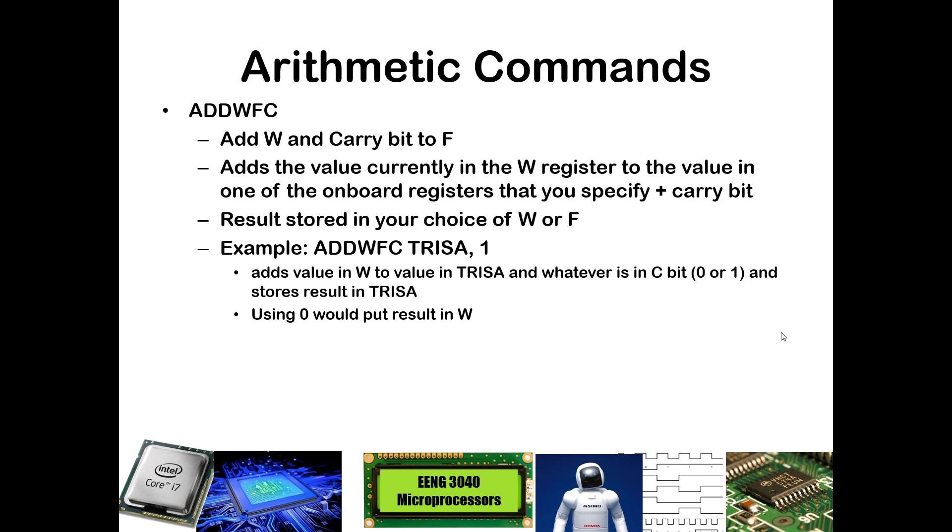ADDWFC is very similar to ADDWF, but it has the added functionality of adding in whatever is in the C bit. This can be done by manually setting or clearing using a bit set or bit clear the C bit in the status register, or you can use the result that was in the C bit from the prior operation. If you had done a previous addition operation that may have impacted the C bit and you want to maintain that value and use it to add to the next, then that can be the case. This does bring in whatever is in the C bit, plus whatever is in the register you specify, plus whatever is in the W.